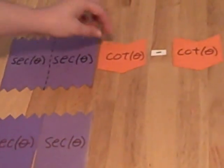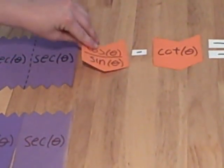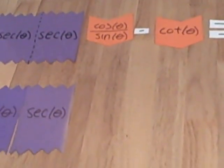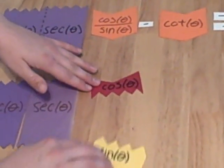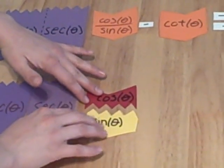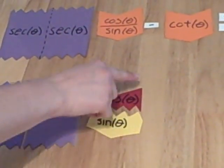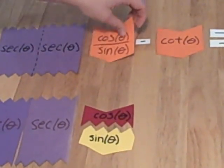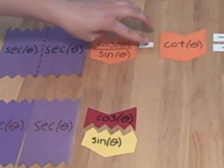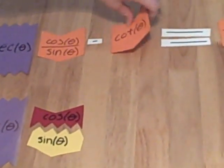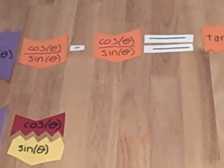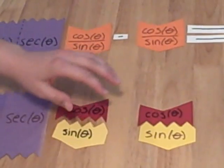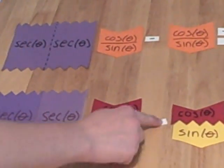The next one we look at is cotangent. When we flip this over, we find that we get cosine over sine. When we pull up our cosine over sine, notice that the shape that they make is the same as the shape of the cotangent. Now we're subtracting another cotangent, so we remember that again that's cosine over sine. And we don't want to forget our subtraction sign between them.